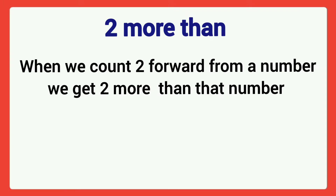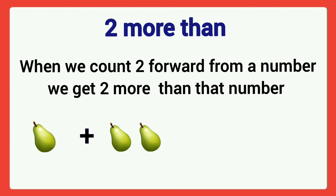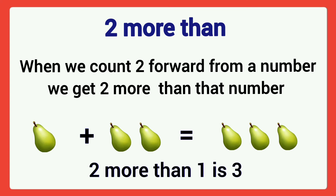Next, two more than. Two more than means when we count two forward from a number, then we get two more than that given number. For example, here one pair. We add two more pairs. Then total number of pairs are three. We can say that two more than one is three.